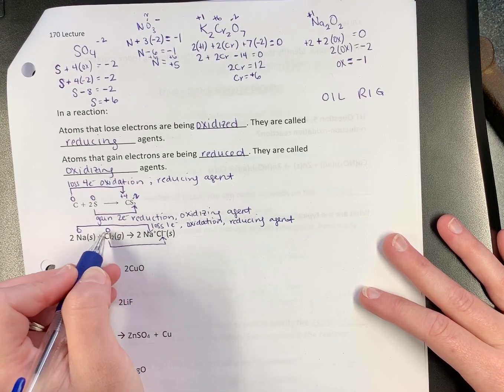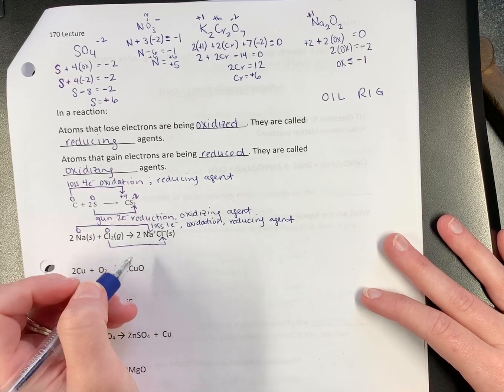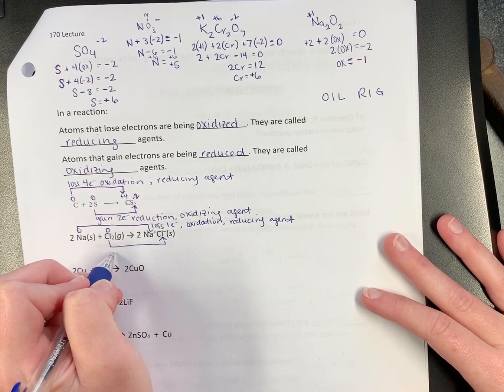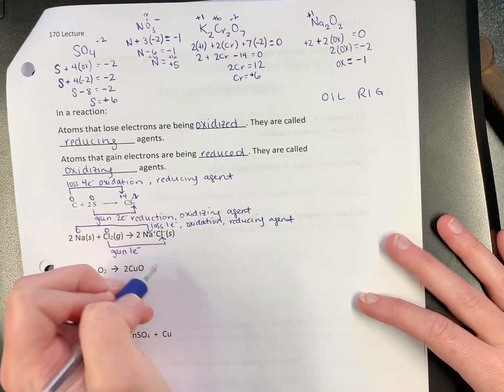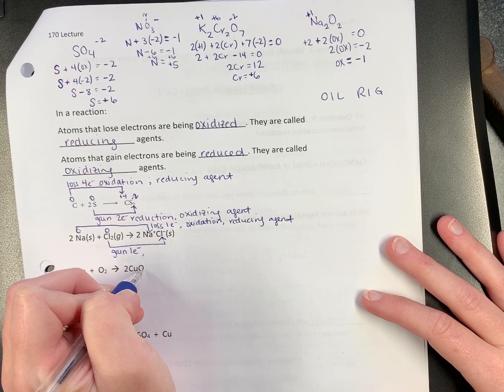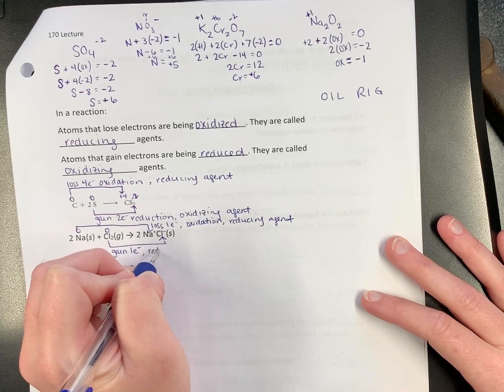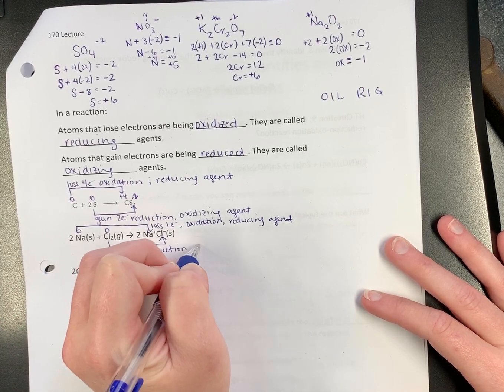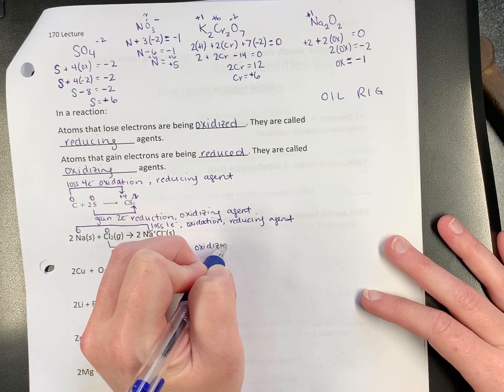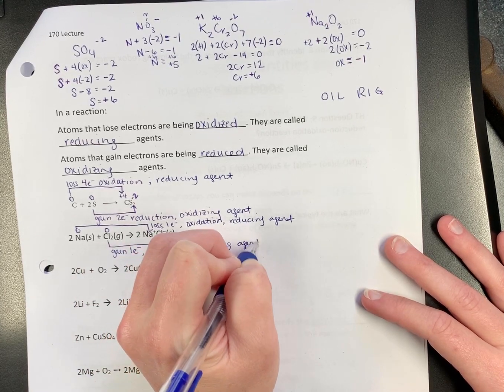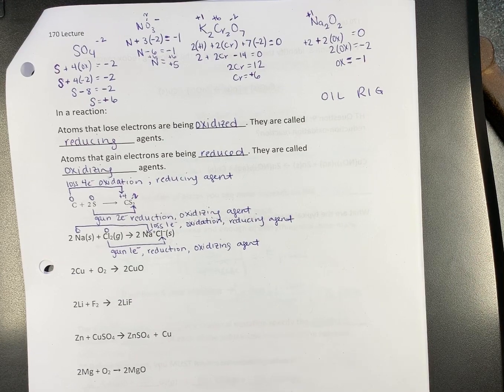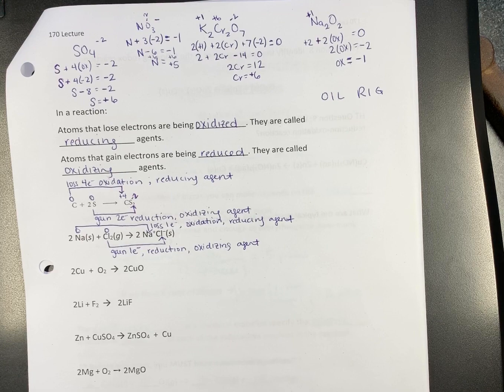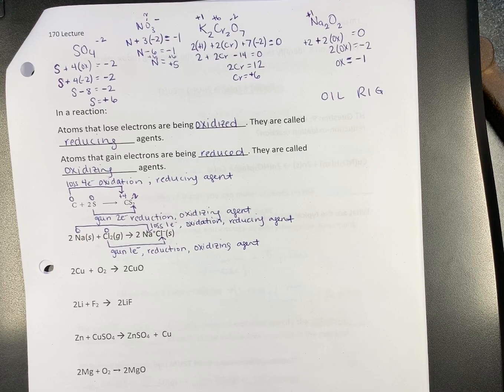Chlorine goes from zero to negative one. Is it gaining or losing? Gaining. It gains one electron. When you gain electrons, that is reduction, which makes it the oxidizing agent.